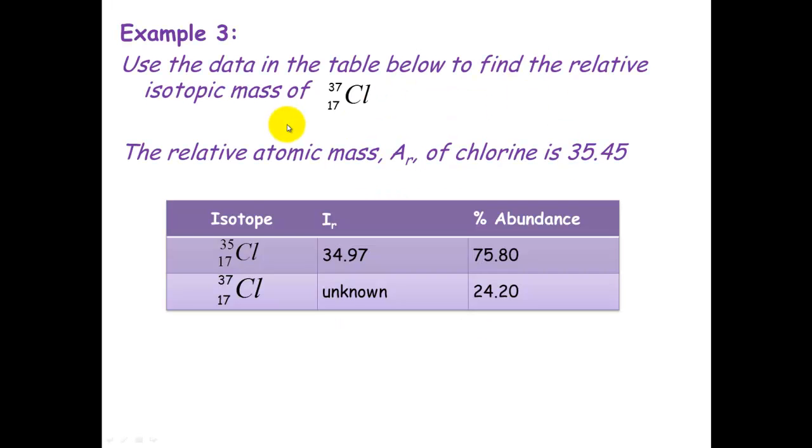It's a slightly different type of example here. Use the data in the table below to find the relative isotopic mass of Chlorine-37. So what we've been given here is the relative atomic mass of the atom, which is 35.45, but we need to work backwards from that to calculate the isotopic mass of Chlorine-37.